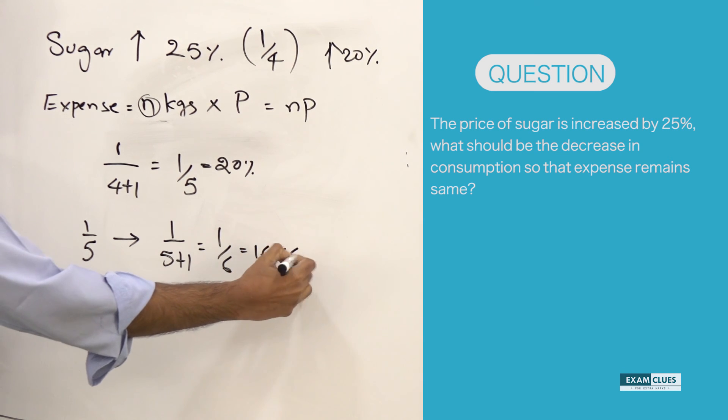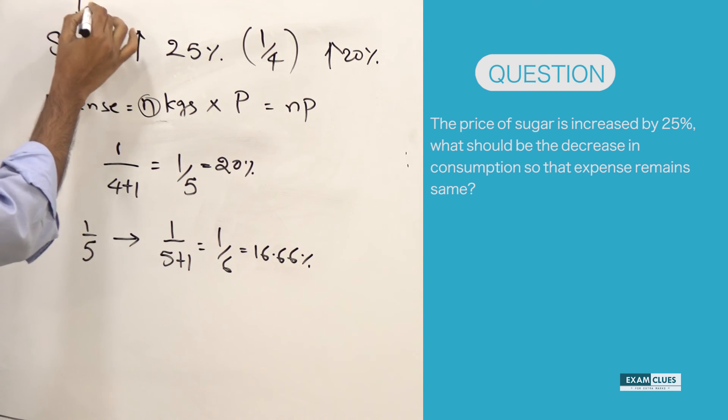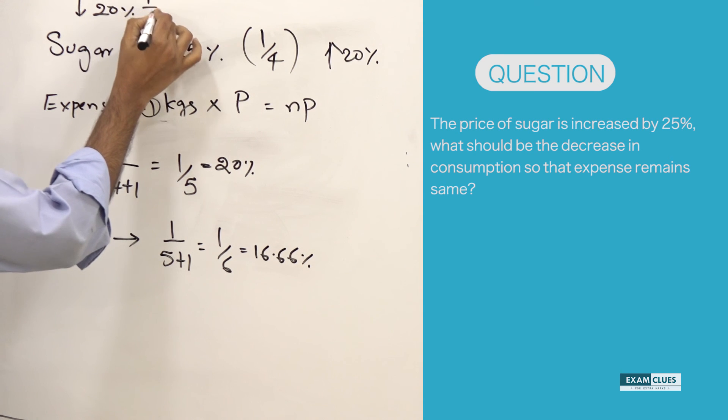Let's assume sugar cost is dropped. In case the sugar cost is dropped by 20%, what should be the increase in consumption so that the expenditure remains the same? When you need to increase, you need to increase that fraction or raise the value of that fraction.